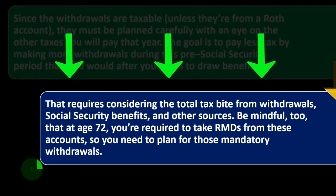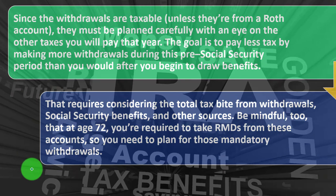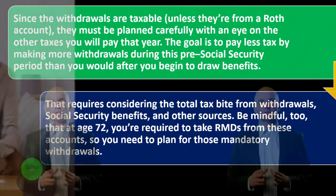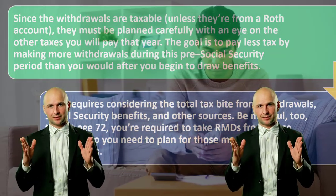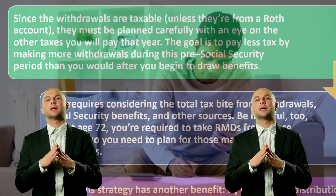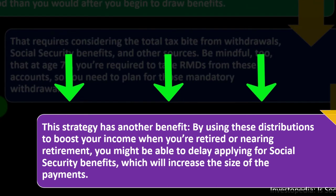Also be mindful that at age 72 you're required to take Required Minimum Distributions (RMDs) from 401(k)s and IRAs. Plan for these mandatory withdrawals — the IRS forces you to take money out and pay taxes on it even if you don't need it. Planning ahead can help limit per-year withdrawals to stay in a lower tax bracket. This strategy has another benefit: by using distributions to boost income while retired or nearing retirement, you might be able to delay claiming Social Security benefits, which will increase the size of your payment.